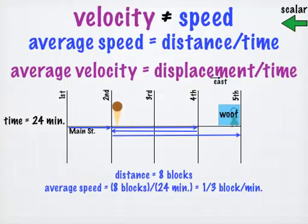Speed is a scalar quantity because it is only described by a magnitude, in this case one-third of a block per minute, and it is not necessarily described by an overall direction. We calculated my average speed while I was traveling both eastward and westward.